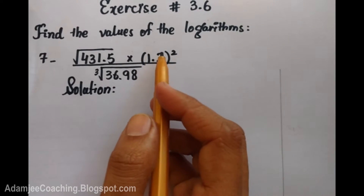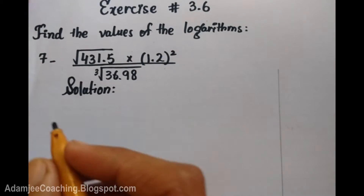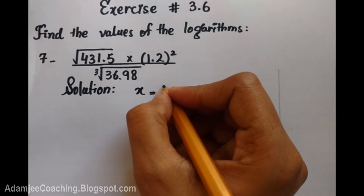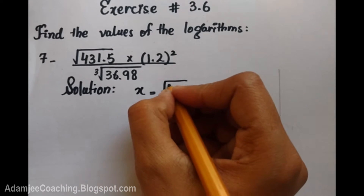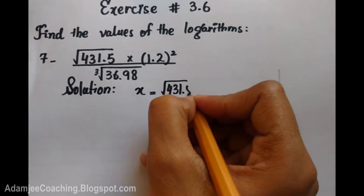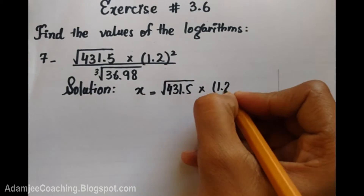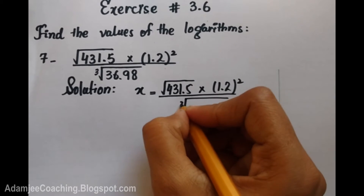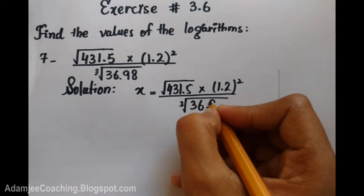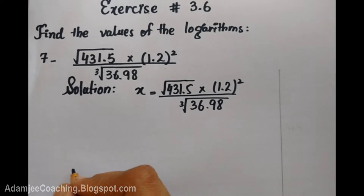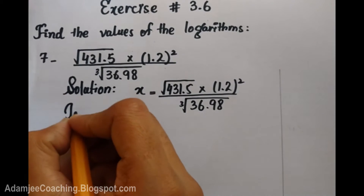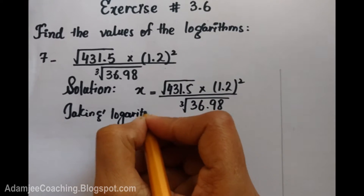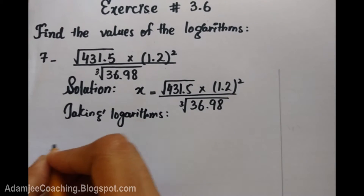We need to find out the values from log — logarithm applied. Let x equal 431.5 multiplied by 1.2 squared, divided by cube root of 36.98. Now taking log on both sides.